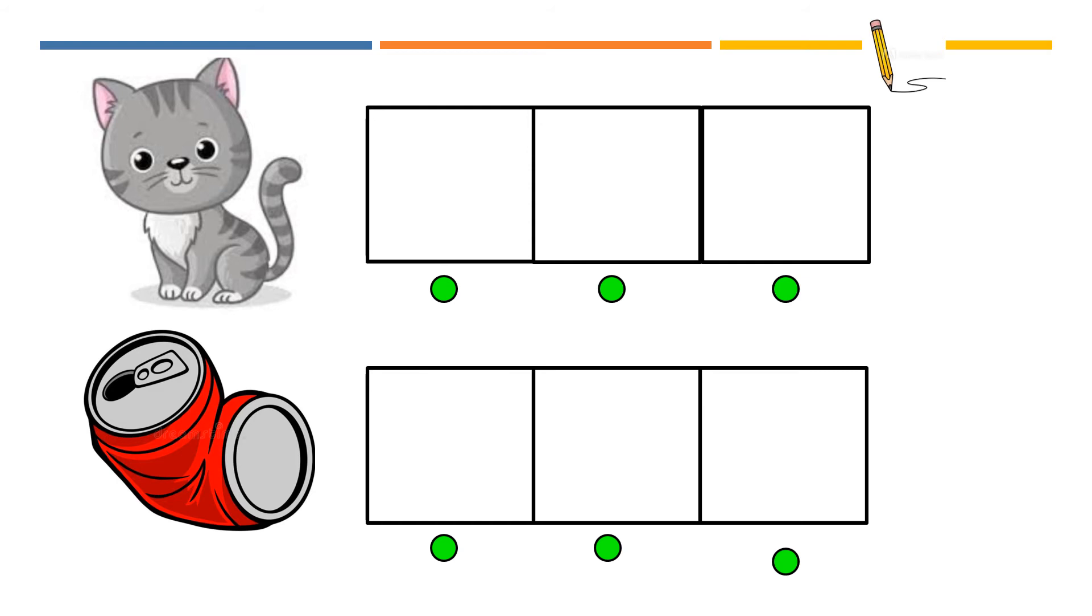We are ready to practice writing words now. When we write words, we need to think of the word in our head and stretch it out to hear all of those sounds in the word. We have to segment the word. So, put your hands by your head and we are going to work together to stretch out the word cat. Are you ready? You're going to have to pull it apart with me. Ready?